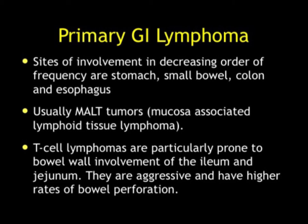Lymphoma is one of the other tumors, and it can obviously involve any part of the GI tract. Small bowel is not uncommonly involved — usually it's a mural tumor. T-cell lymphomas are particularly prone to bowel wall involvement and typically involve the ileum or jejunum. T-cell lymphomas are very aggressive and have higher rates of bowel perforation. Often patients who get treatment when they have bulky tumors respond very aggressively, and those are the ones that often do perforate.